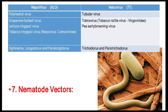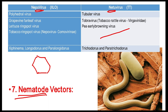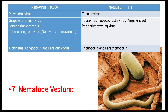Nematode as a vector — there are two types of viruses: Nepovirus (nematode-transmitted polyhedral virus) and Tobravirus (nematode-transmitted tubular virus). Nepoviruses are polyhedral in shape, while Tobraviruses are tube-like or rod-shaped. Examples of Nepovirus: grapevine fanleaf virus, lettuce ringspot virus, and tobacco ringspot virus. Examples of Tobravirus: tobacco rattle virus and pea early browning virus. Nematodes that transmit viruses: Xiphinema, Longidorus, and Paralongidorus transmit Nepoviruses; Trichodorus and Paratrichodorus transmit Tobraviruses.